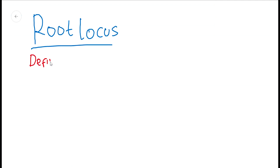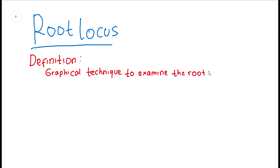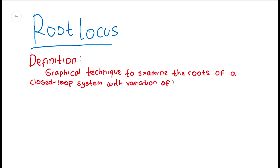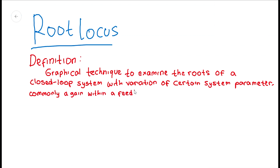In this video, we will talk about one of the techniques that will help you analyze closed-loop forms of a system: the root locus. The root locus technique is a graphical technique for examining how the roots of a system change with variation of certain system parameters, commonly a gain within a feedback system.